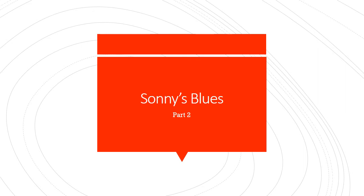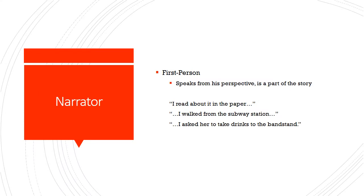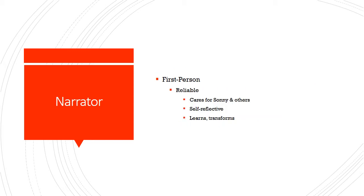Let's look first at Sonny's Blues by James Baldwin. What kind of narrator do we have? It's obviously a first-person narrator because he speaks from his perspective and is a part of the story. A few quotations to support this: 'I read about it in the paper.' 'I walked from the subway station.' 'I asked her to drink, to take drinks to the bandstand.' This is all speaking from the first person, talking about what they're doing in the story. In terms of reliability, this is a reliable narrator.